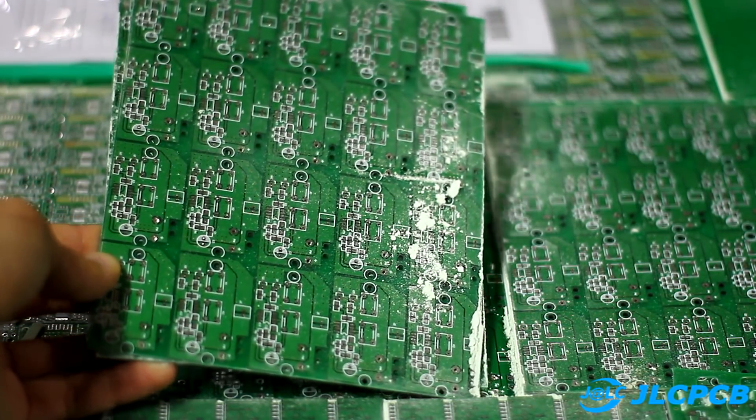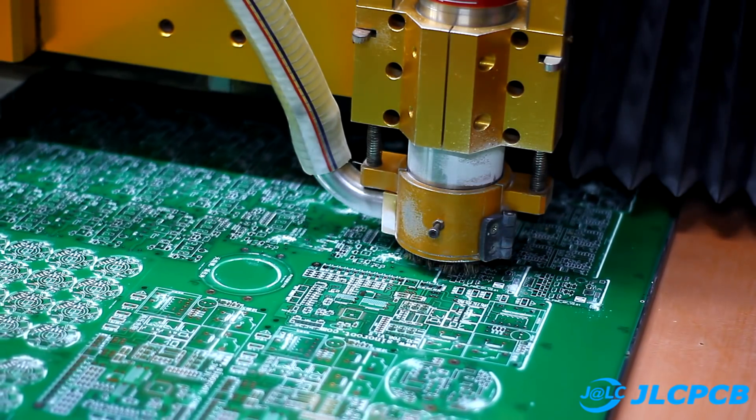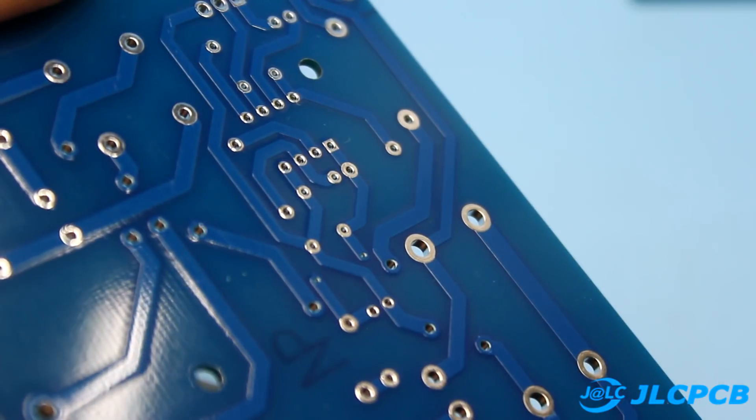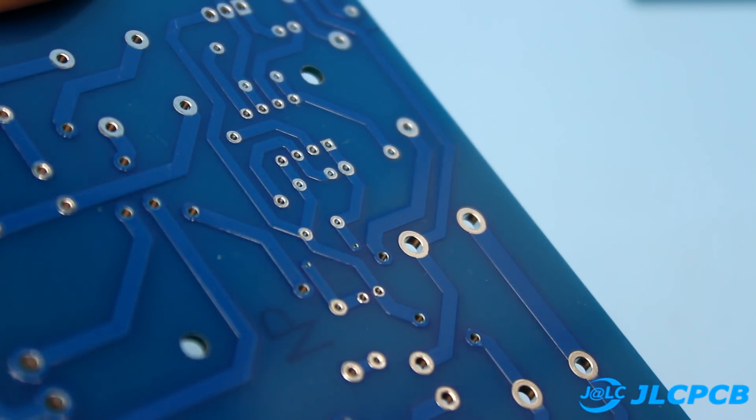You will get the highest quality at the most affordable prices for only $2 per batch of boards with dimensions of 10-10 cm. A link to the JLCPCB website can be found in the description.